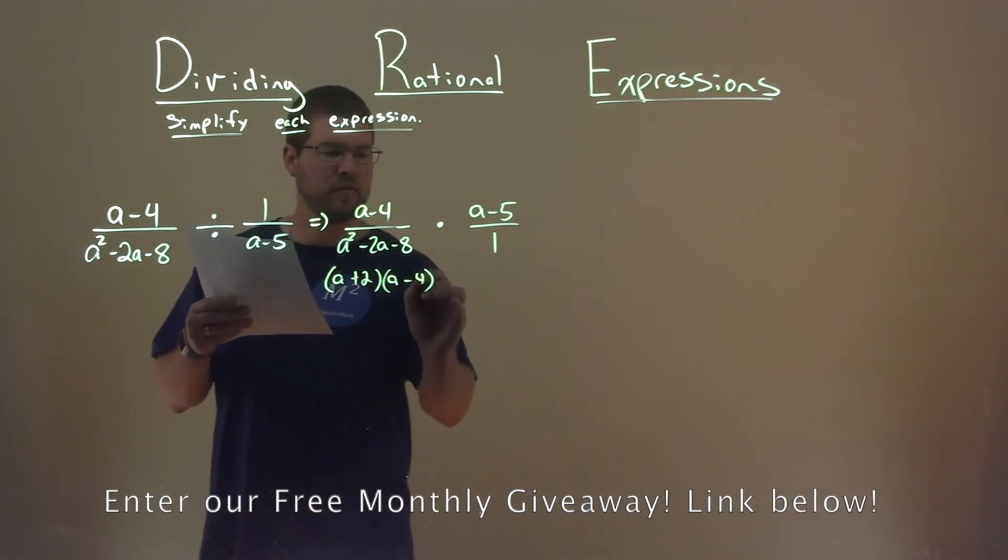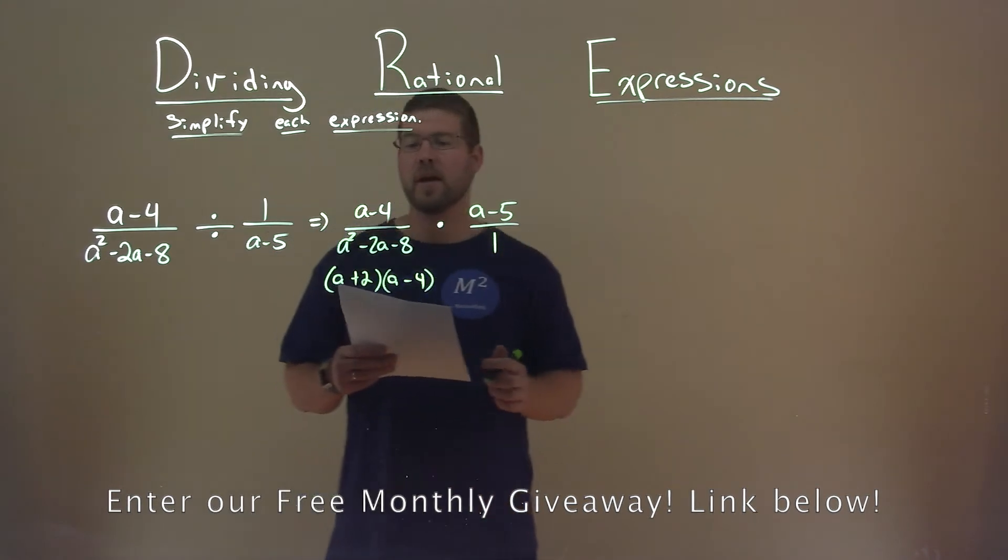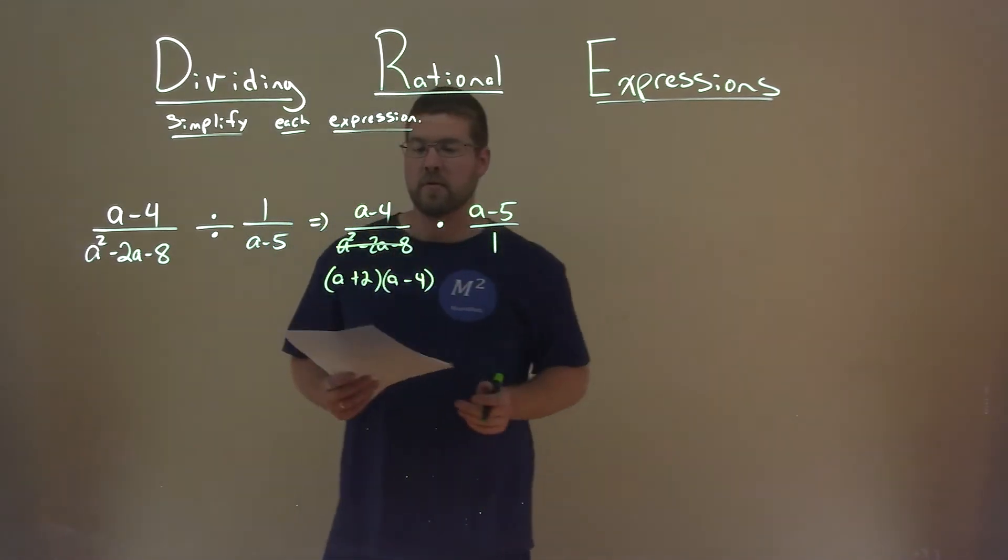2 times negative 4 is negative 8, add the 2, we get negative 2. So we're going to replace this with this factored form.